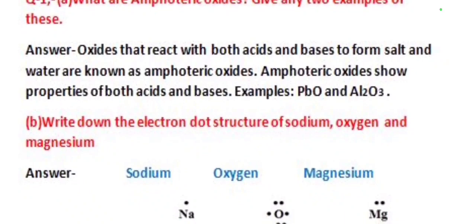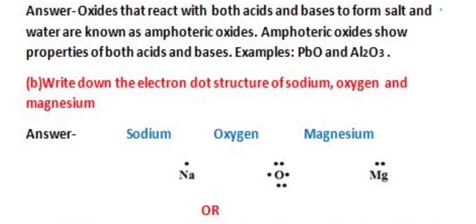Our next question is: write down the electron dot structure of sodium, oxygen and magnesium. In sodium, there is only one electron in its outermost shell, so we write one dot on sodium (Na).